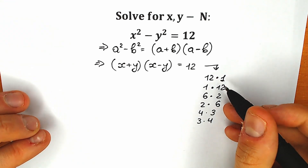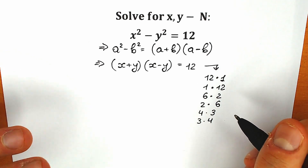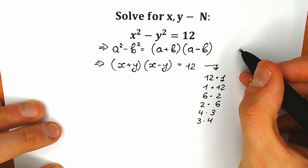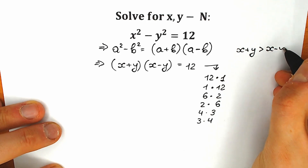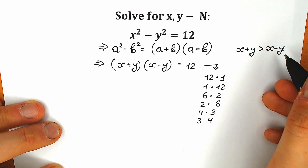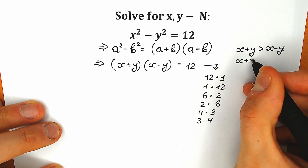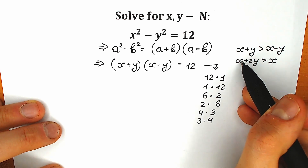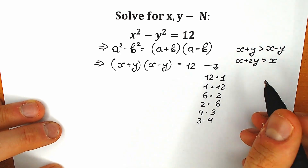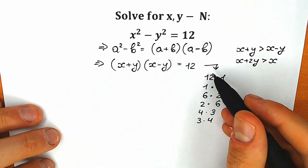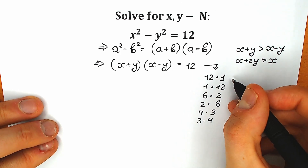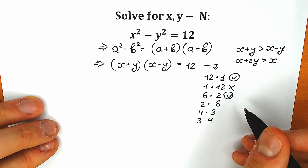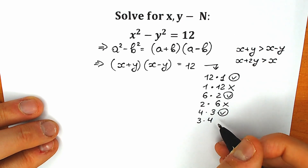A lot of students make the common mistake of checking all combinations. However, we know that x plus y is greater than x minus y — if you add y to both sides of that inequality, you get x plus 2y greater than x, which confirms the left parenthesis is larger. So we only need cases where the first factor is greater: 12×1, 6×2, and 4×3. That gives us only three cases.